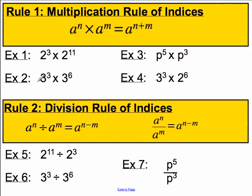Let's formalise this. Here's the multiplication rule for indices: if you're multiplying when the base number is the same, then you can add the indices — but the base number must be the same, remember that. And when you are dividing two sets of indices where the base number is the same, you can subtract the indices.